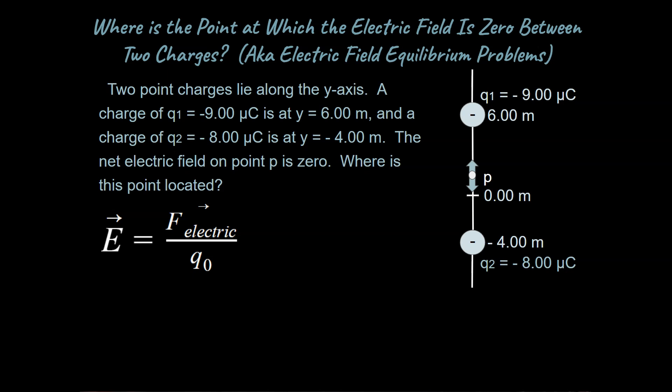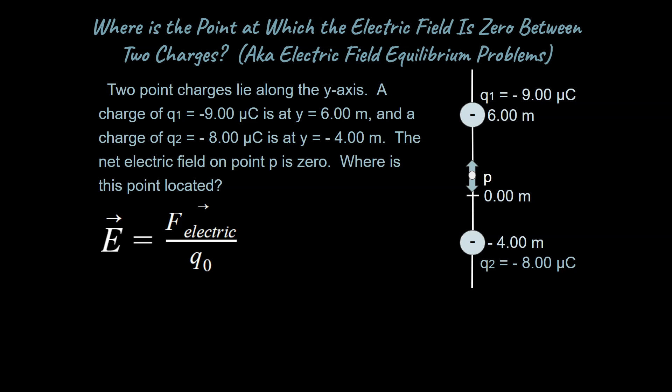Welcome back. We've been talking through how to deal with electric field problems in physics and AP physics classes, and I want to continue with that and show you how to do a tougher problem where you need to find where a point in space is, we'll call it point P, where the electric field is zero.